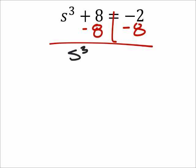And I've got this s cubed on one side, and I've got it equal to negative 2 minus 8 is negative 10. So I need to get rid of that cube by cube rooting both sides.